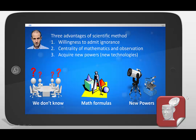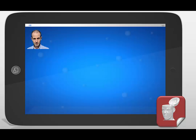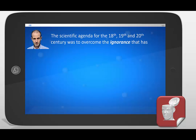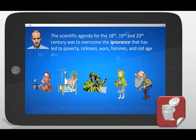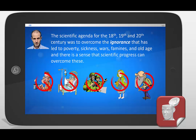We acquired all kinds of new powers and technologies, with telescopes and microscopes, and expanded our powers significantly during and after the scientific method. Harari also says the scientific agenda for the 18th, 19th, and 20th century was to overcome the ignorance that has led to poverty, sickness, wars, famines, and old age. There is a sense that scientific progress can overcome these.